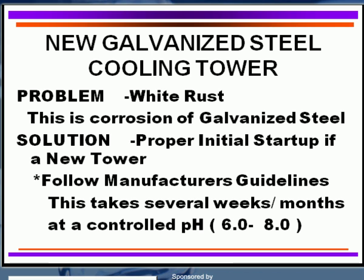The proper method to resolve this white rust problem on a new cooling tower is to start up that cooling tower properly from the water treatment standpoint. The guidelines from the manufacturer say you can do this in several weeks or several months by controlling the pH down in the range of six to eight, and you will gradually form a protective film on those galvanized steel surfaces. There are other techniques that can be utilized as well.